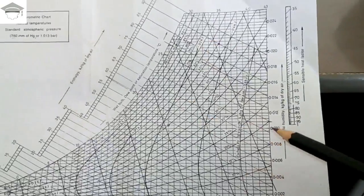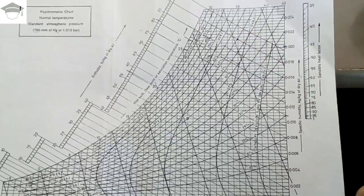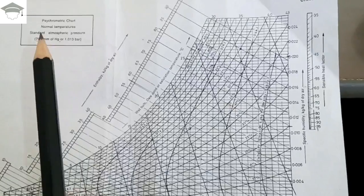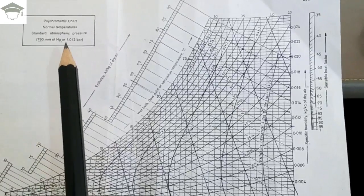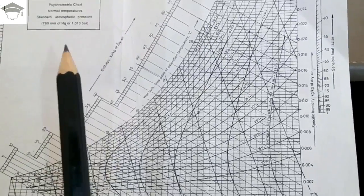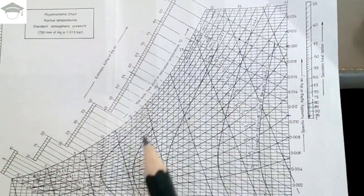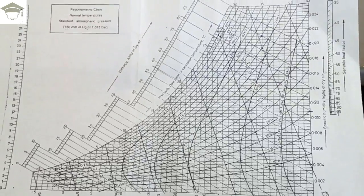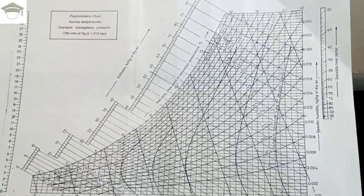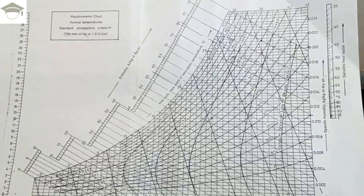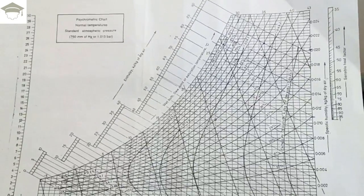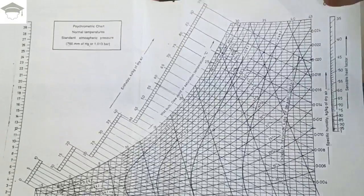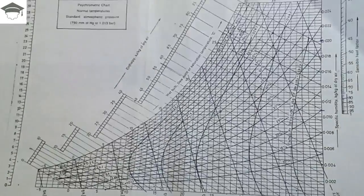These are the basic properties shown on the psychrometric chart. Remember that the psychrometric chart is drawn at 1 atm pressure — that is 760 mmHg or 1.01325 bar — which is standard atmospheric pressure. If the pressure in a question is different, you cannot use the psychrometric chart and must use the relations instead. In the next video I'll explain how to solve those questions.